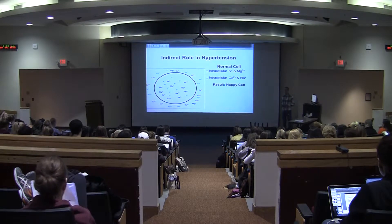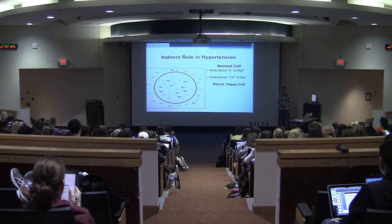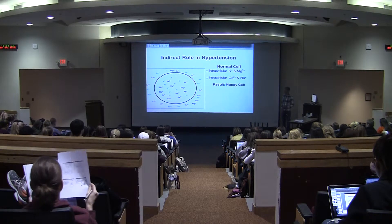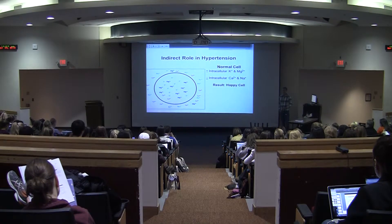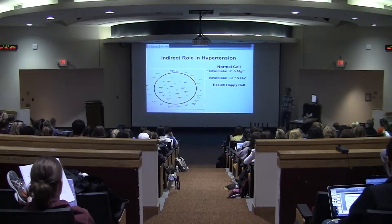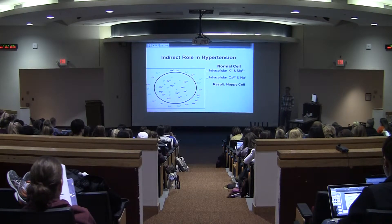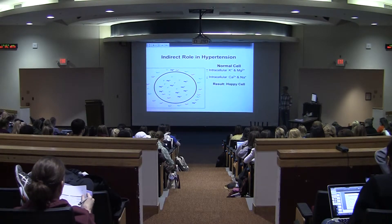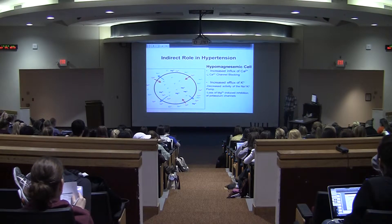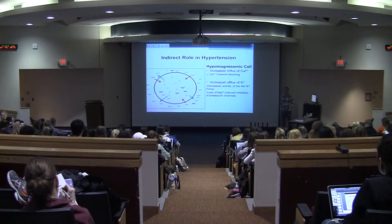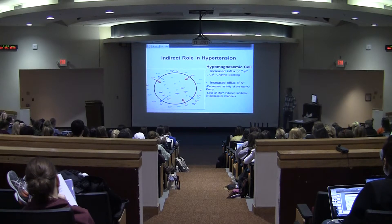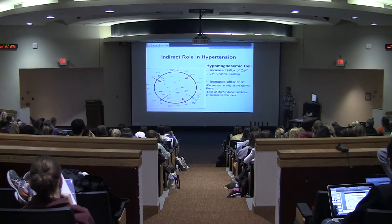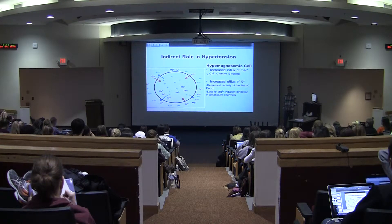One of the primary roles that hypomagnesemia has been found to influence is its role in hypertension. In a normal cell, you have high potassium and magnesium in the intracellular space, and low calcium and sodium within the intracellular space — this results in a happy cell maintaining its normal movement. When in a hypomagnesemic state, with lower intracellular magnesium, there is increased influx of calcium due to the fact that low magnesium is no longer blocking calcium channels.